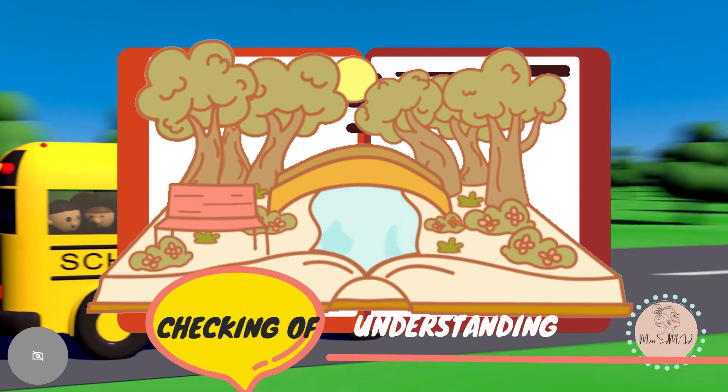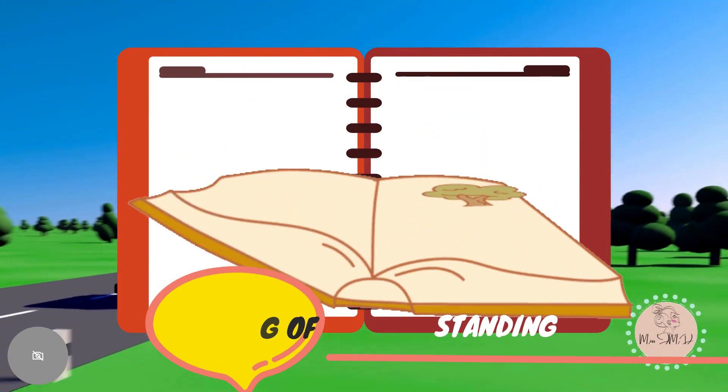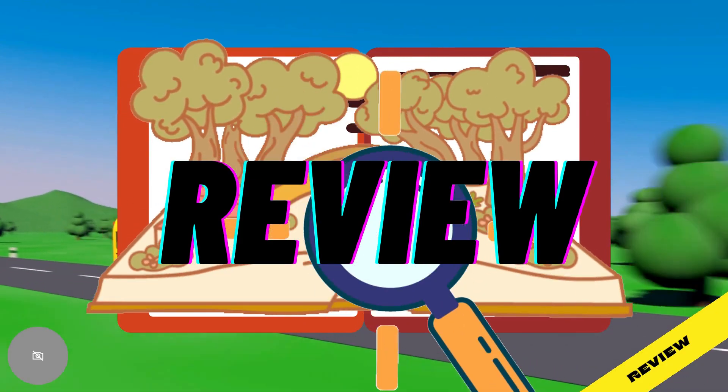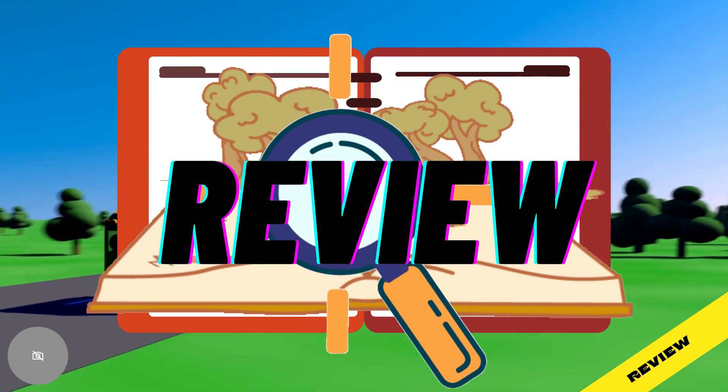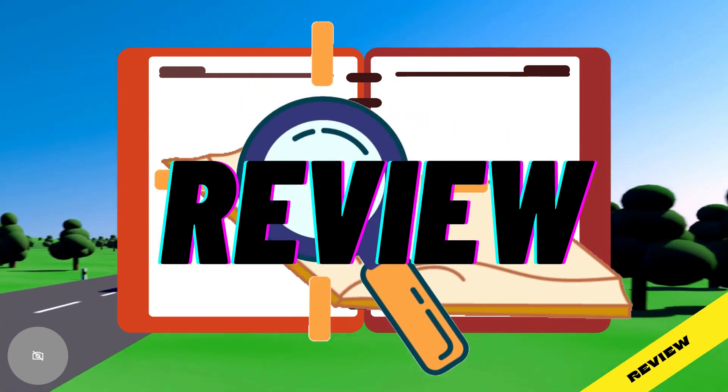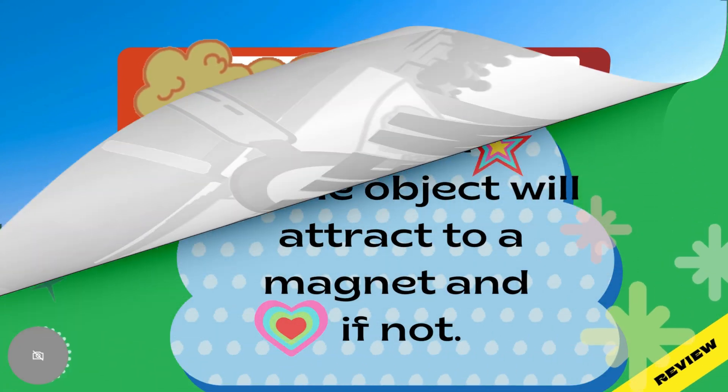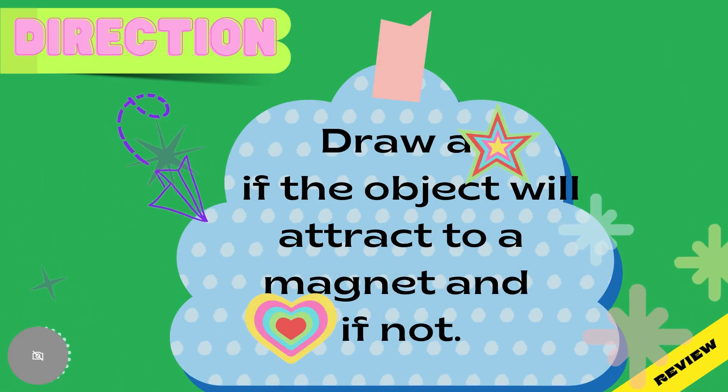Now, let me check your understanding of our past lesson by answering this quick review. You may write your answer below this video. Are you all ready? Let's begin. Direction: Draw a star if the object will attract to a magnet, and heart if not.